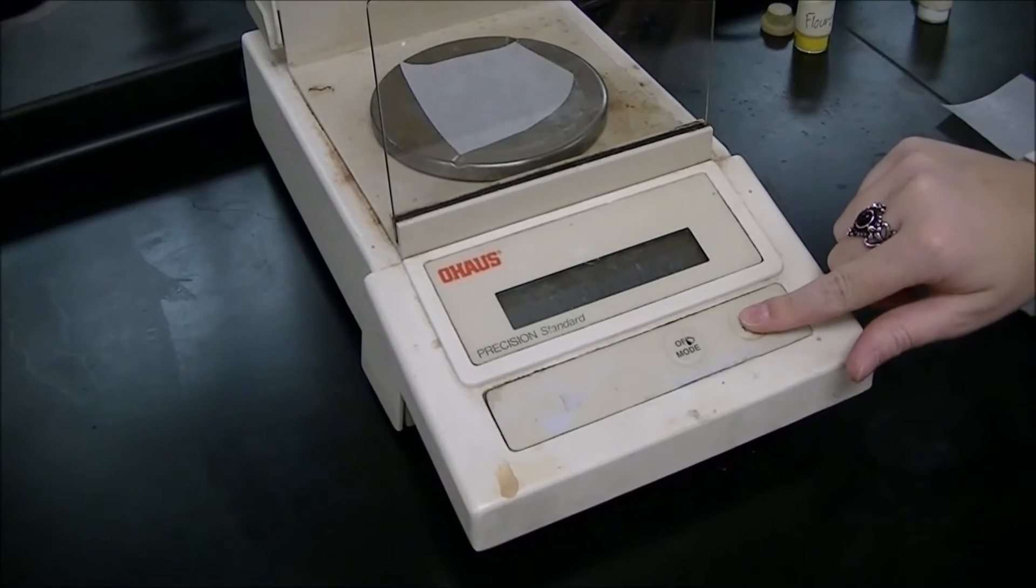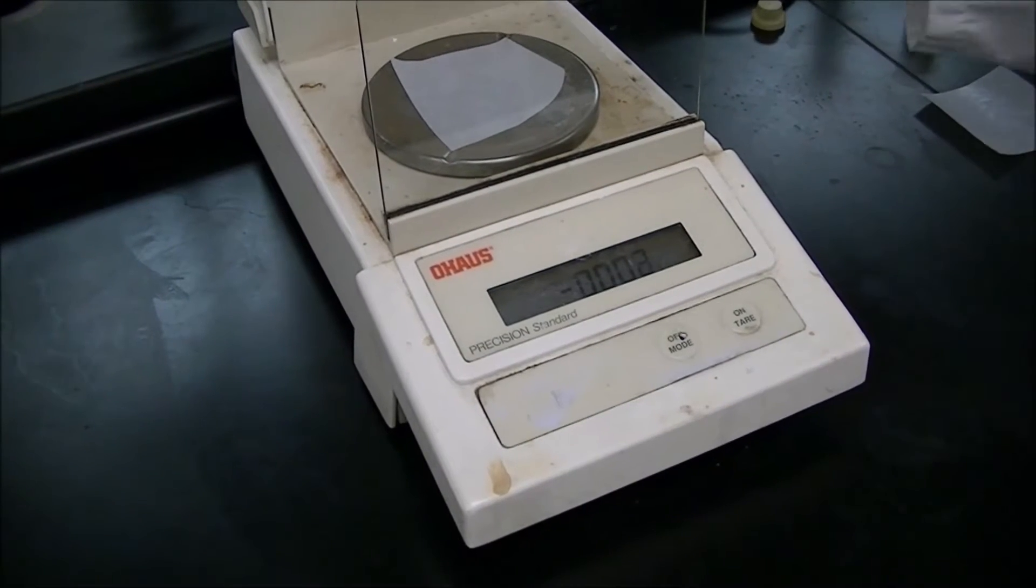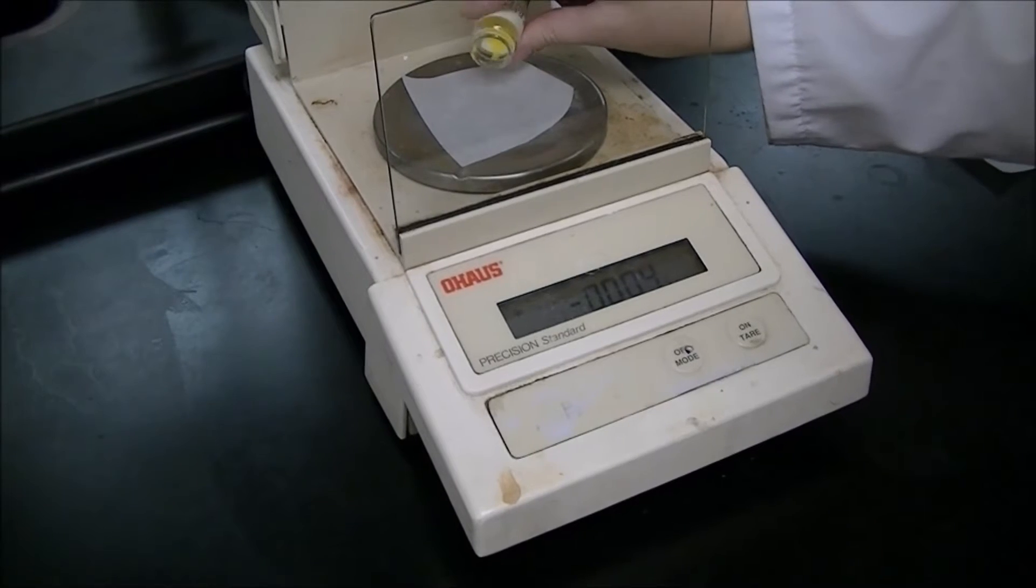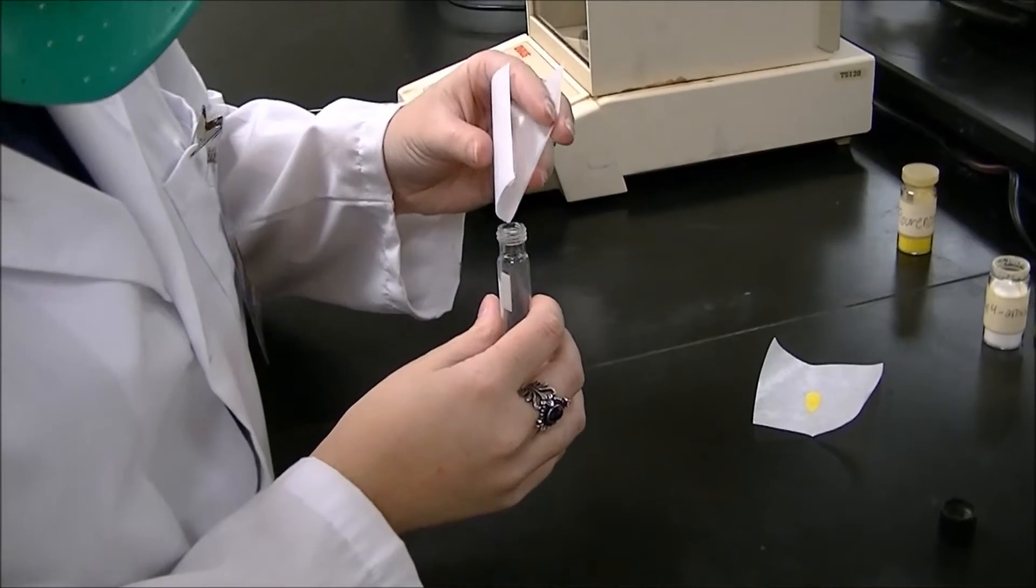Tare the mass of your weigh paper, and then weigh 50 milligrams of your 9-fluorenone and your ethyl-4-aminobenzoate. Add your two compounds to your centrifuge tube.